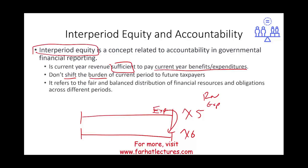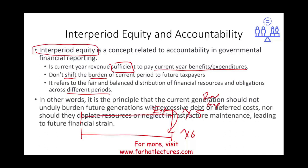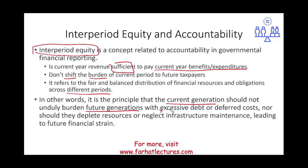Inter-period equity refers to the fair and balanced distribution of financial resources and obligations across different generations and periods. The principle is that the current generation should not unduly burden future generations with excessive debt or deferred costs, nor deplete resources or neglect infrastructure maintenance. Simply put, people living in a city in a given year should incur expenditures and revenues relating to that specific year. We should not shift expenses to future years. That's part of the goal of financial reporting.